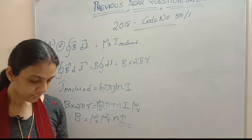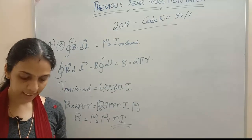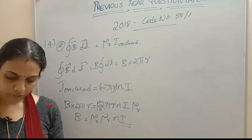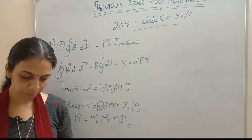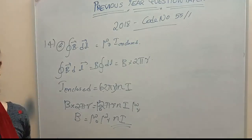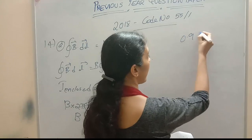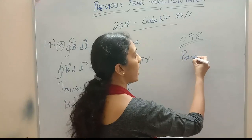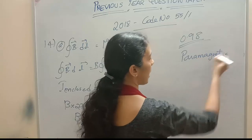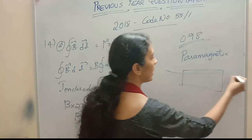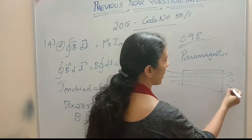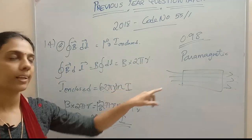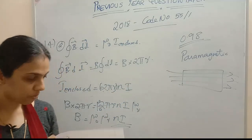The susceptibility of a magnetic material is 0.9853 — identify the type of magnetic material and draw the modification of the field pattern when placed in a uniform magnetic field. Susceptibility is nearly equal to 1 but less than 1, so we can consider it a paramagnetic material. Most of the magnetic field lines will be coming inside the material — that is the field pattern modification for a paramagnetic material.